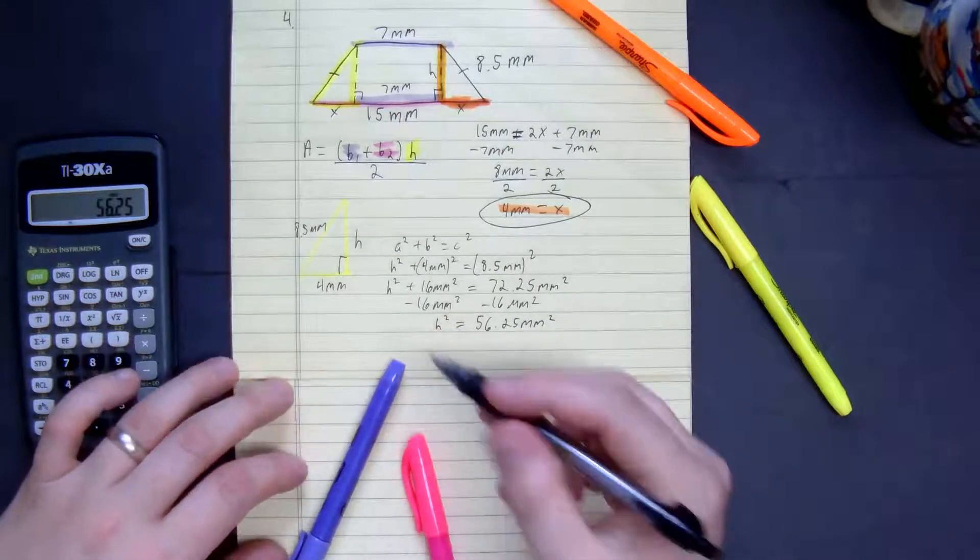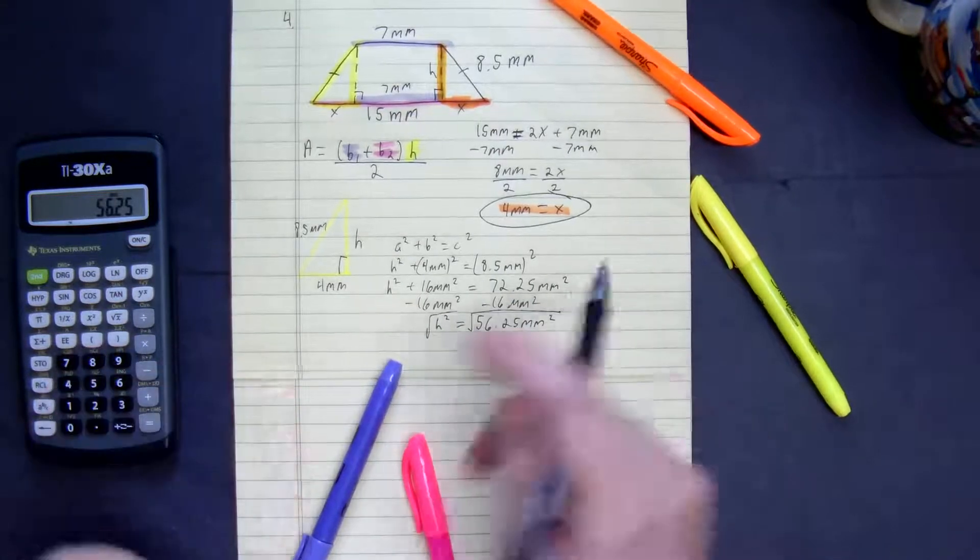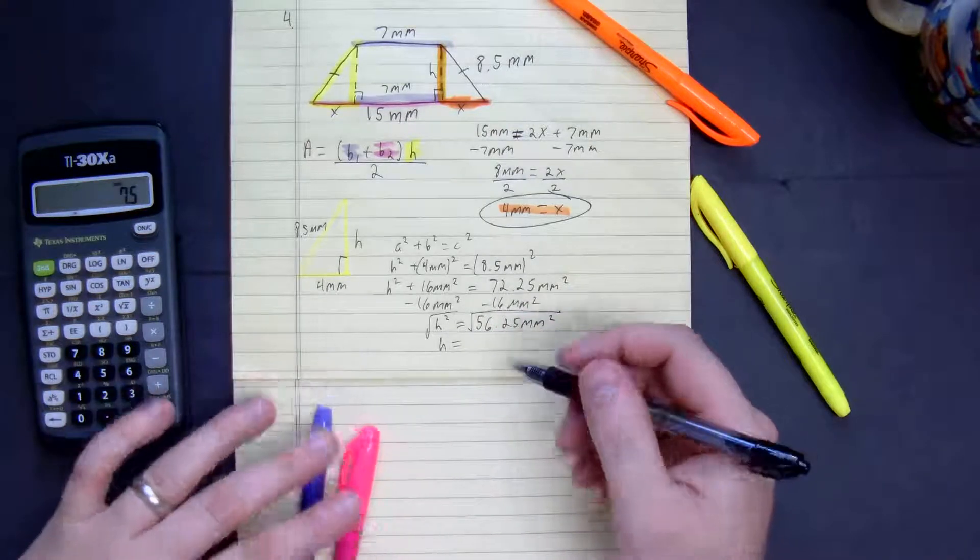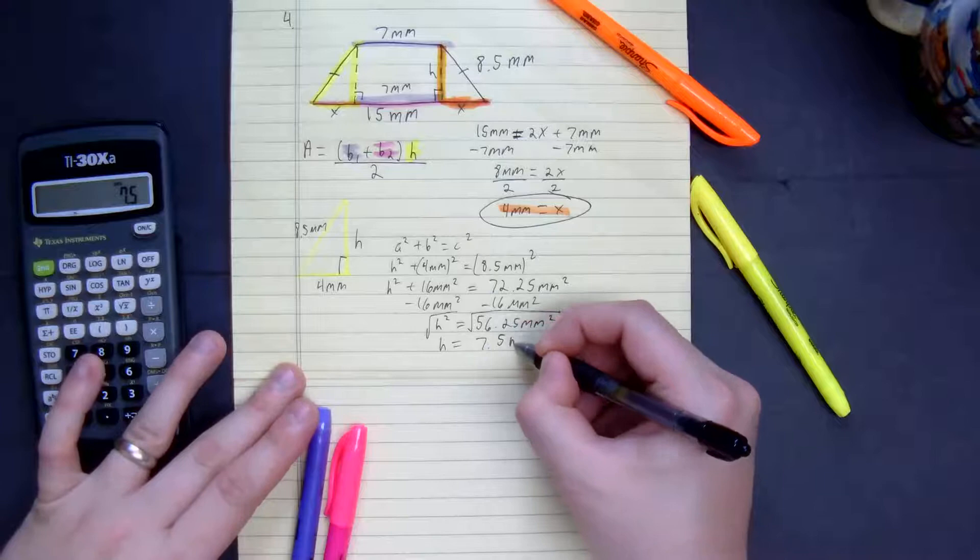We want to find the height. We want to isolate it. Square root. Square root. The height of this isosceles trapezoid is 7.5 millimeters.